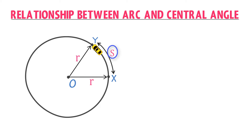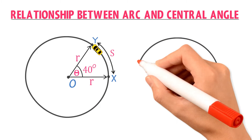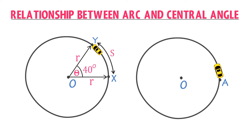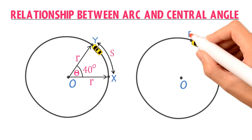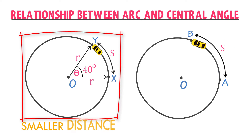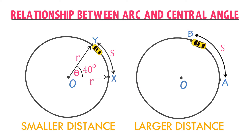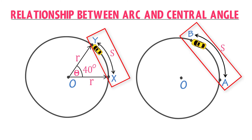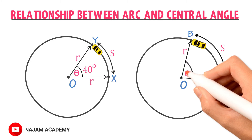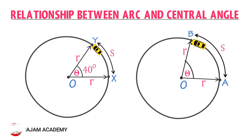This arc, or distance S, extends an angle theta at the center of the circle — let's say theta equals 40 degrees here. Now consider another circle where the body displaces from point A to point B. In this circle the distance covered is small, while in this circle the distance covered is large from point A to point B. This arc is smaller than that arc, so it extends a larger angle theta at the center — let's call this theta equals 60 degrees.